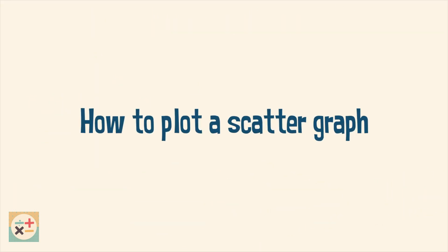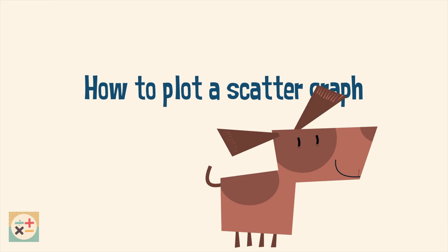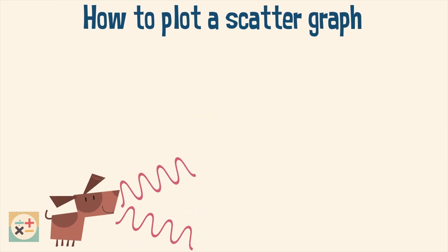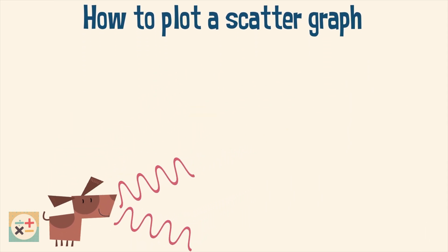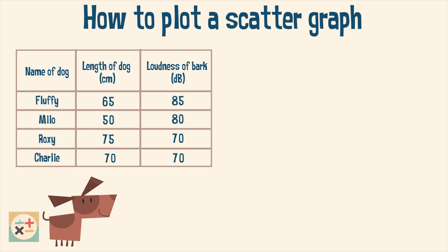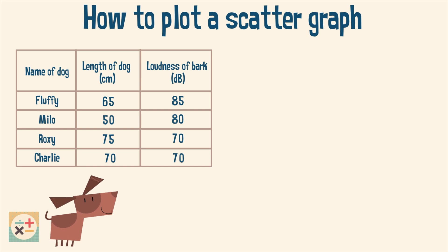So how do you plot a scatter graph? Have a look at this set of data. We are given values for the size of each dog in centimeters and the loudness of its bark in decibels.